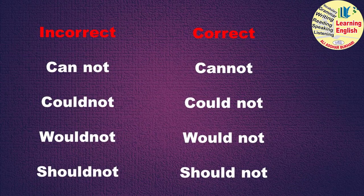ایسے ہی باقی نیگٹیو سنٹنسز بناتے ہوئے جب بھی کوئی modal auxiliary یا other helping verb use کیا جائے — جیسے shall not، will not، could not، would not، should not وغیرہ — تو ان سب میں کسی بھی helping verb اور 'not' کے درمیان space دینی ضروری ہے اور انہیں الگ الگ ورڈز کے طور پر لکھنا ضروری ہوتا ہے۔